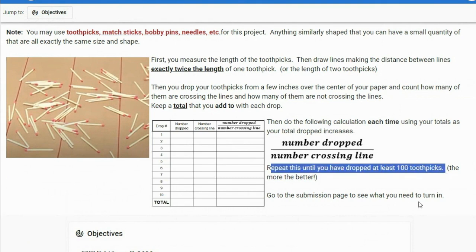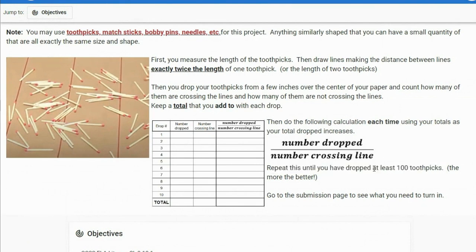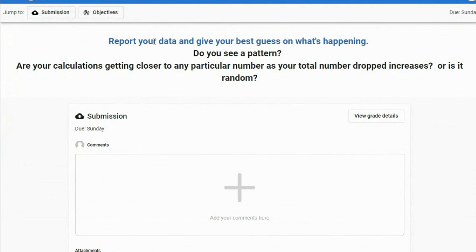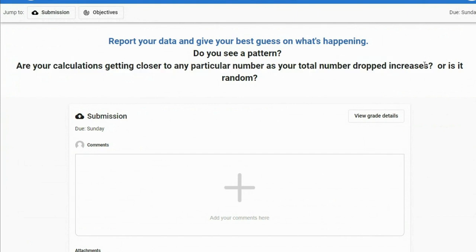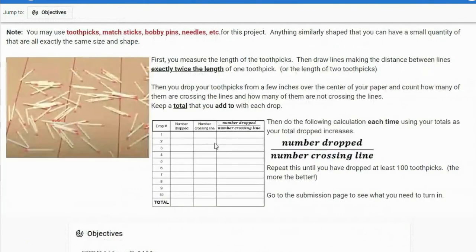We're going to keep dropping until you've dropped at least 100. If you've only got five, you're going to drop them 20 times. If you've got 10, drop them 10 times. You can drop 200 if you want, just at least 100. Then we'll go to submission page and see what needs to turn in. Just report your data, that spreadsheet you make on paper or on a computer. And then what's happening? Do you see a pattern? Are your calculators getting closer to any particular number as your total increases?